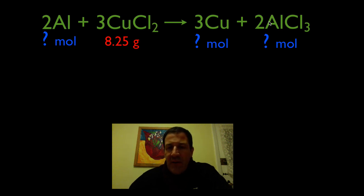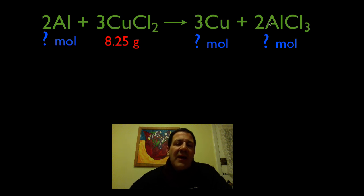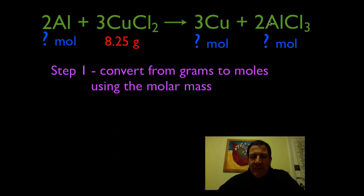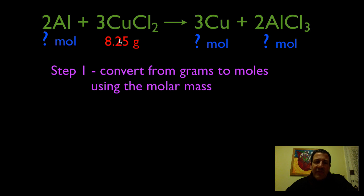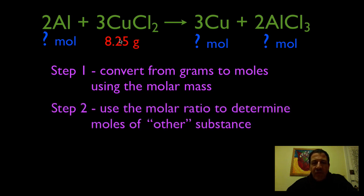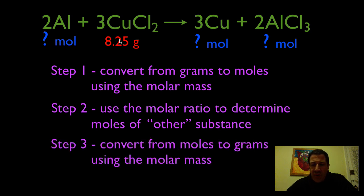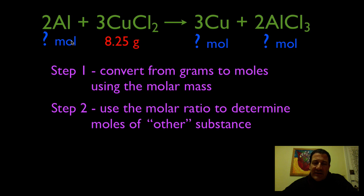There are three steps to every good stoichiometry problem. In this case we're going to use two of them, but let's run through all three. The first step is to convert from grams to moles using the molar mass. Step two, we use the molar ratio between the copper chloride and the other substances to determine the moles we need or produce. And if we wanted to, we could convert the moles into grams using the molar mass, but we're not going to do that in this video.